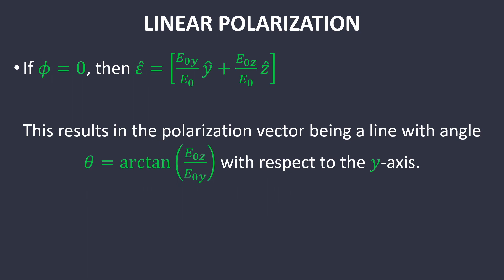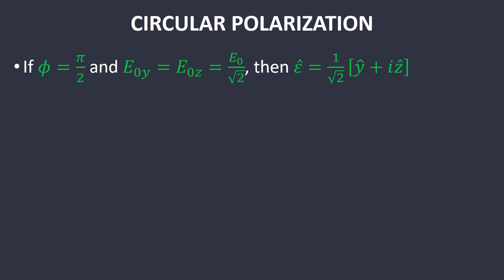In the simplest case, we have linear polarization, where the polarization does not change. It just oscillates along a line. That's called linear polarization, where you have a phase shift of zero between the components. This creates a line with an angle θ with respect to the y-axis when it is propagating in the x-direction.